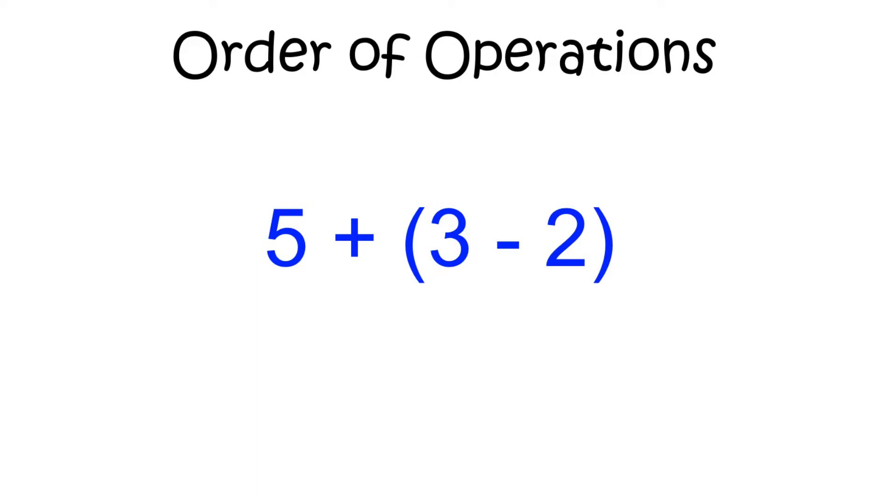First off, if you see any sets of parentheses in the problem, you must complete the math inside of them first. In this example, you will need to subtract the 2 from the 3 before doing anything else. 3 minus 2 is 1. The problem now looks like this. You can finish the math now by adding 5 and 1 and getting 6.